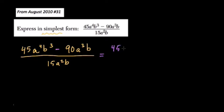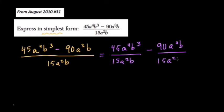here the first term 45a⁴b³ over 15a²b is being subtracted by 90a³b over the same denominator. If you remember anything about fractions, when you add or subtract them, they always have to have the same denominator, so to speak.